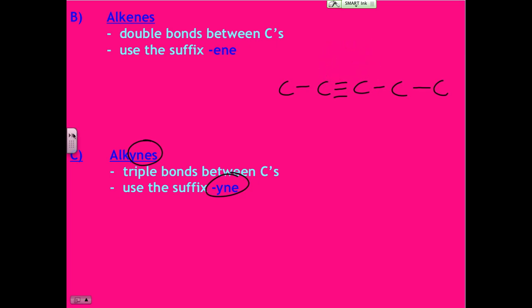So this one would be named, who wants to take a shot at naming this one? Go for it. There's no branches, so yeah. Pentyne. Two pentyne. The two tells me that the triple comes after the two. And the five is my pent. And then Y-N-E because it's a triple.